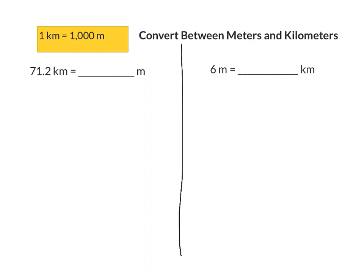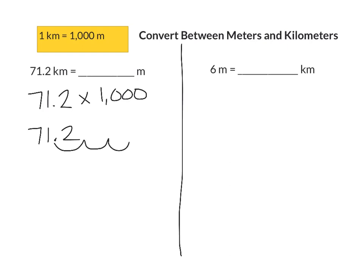Next we're going to be converting between meters and kilometers. The conversion factor is 1 kilometer equals 1,000 meters. First let's look at going from kilometers to meters — when you go from kilometers to meters, you multiply by 1,000. So we take 71 and 2 tenths kilometers and multiply by 1,000. When you multiply by 1,000, you move your decimal point three places to the right — 1, 2, 3 — and add in zeros to the places created. Our final answer is 71,200 meters.